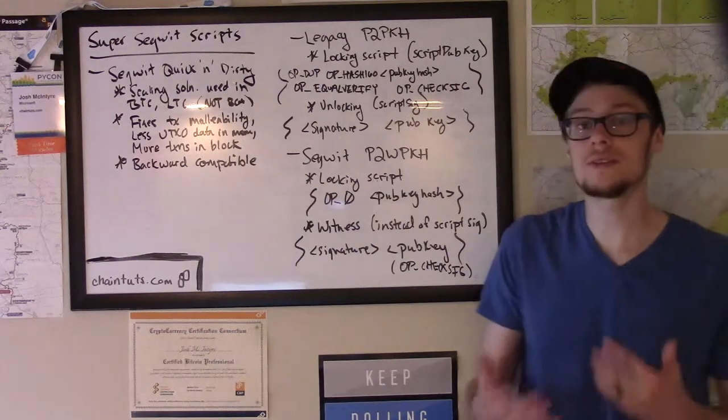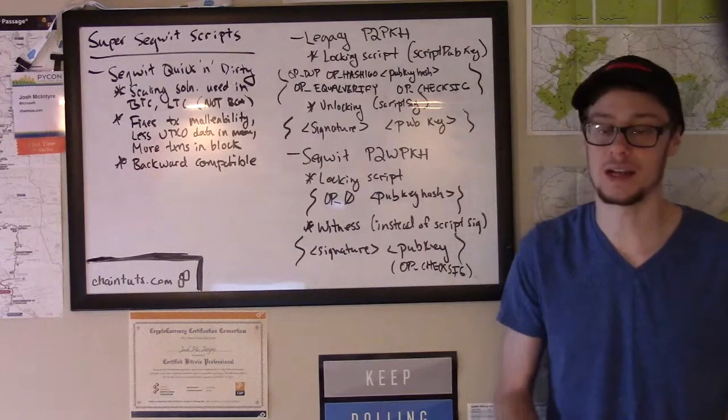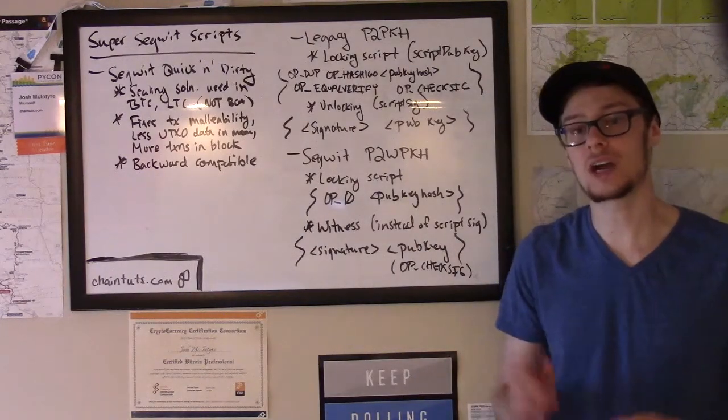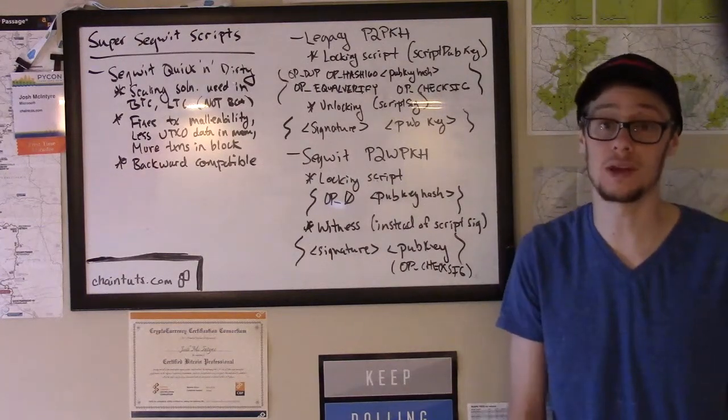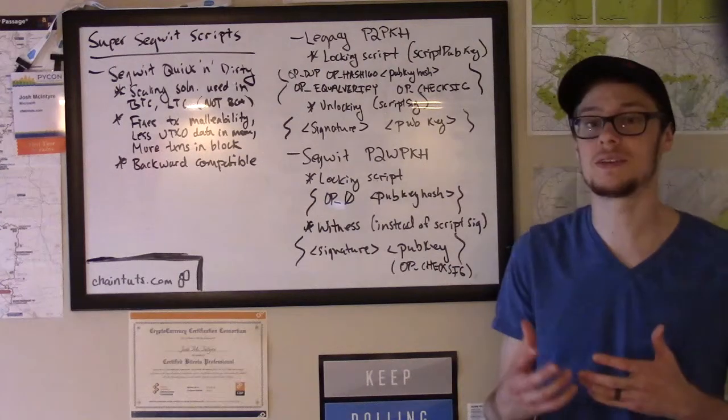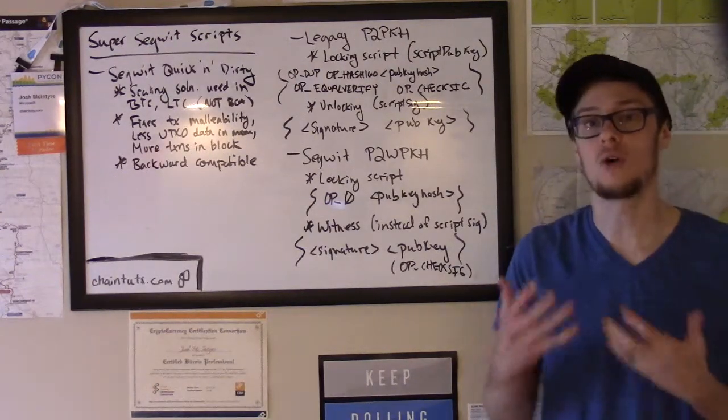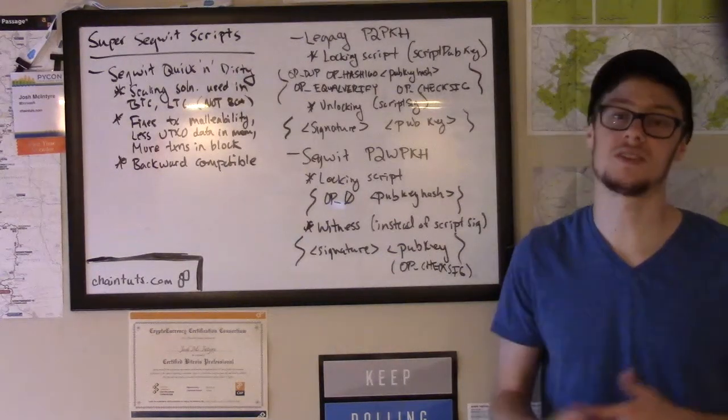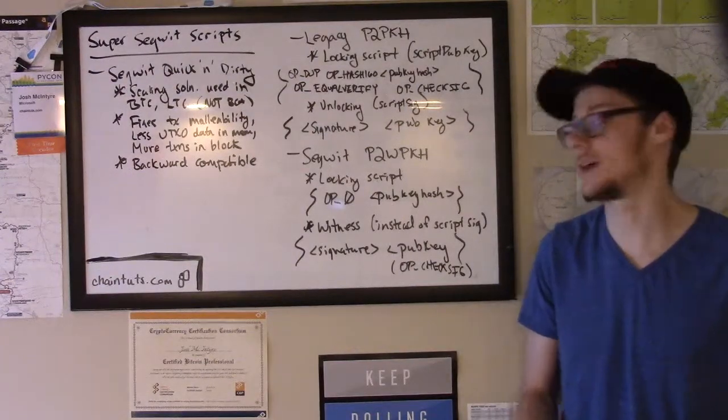What's the difference with a SegWit paid to witness public key hash transaction? Well, they're actually similar in a lot of ways. There are a couple of minor differences that allow this soft fork backward compatibility that I was talking about earlier, as well as this ability to decrease the amount of data required to create one of these transactions and allow the blocks to scale without creating a hard fork block size limit increase.